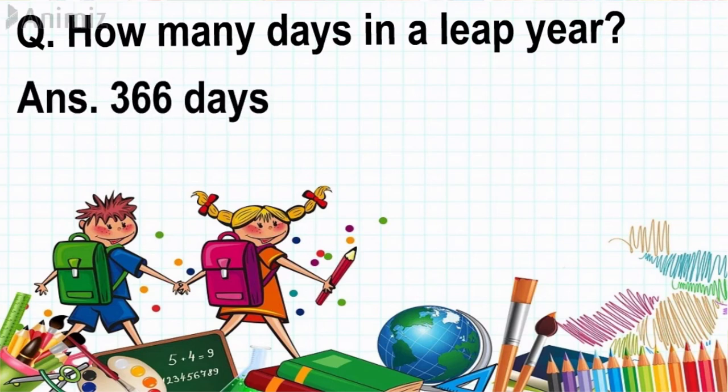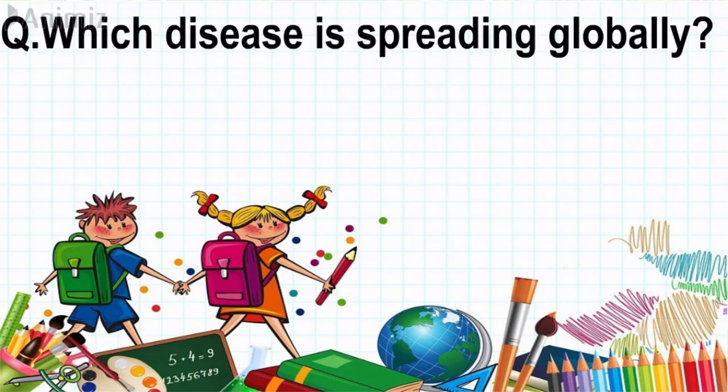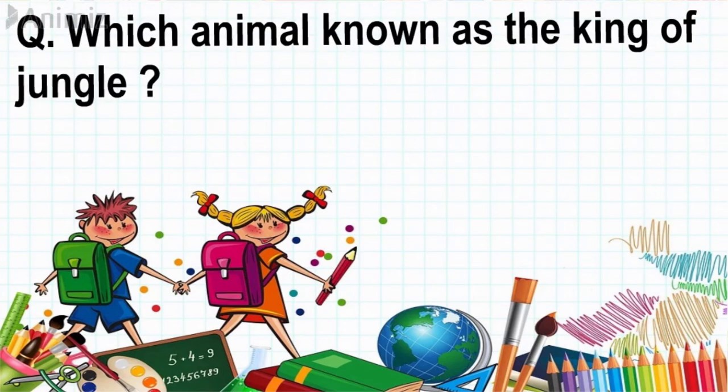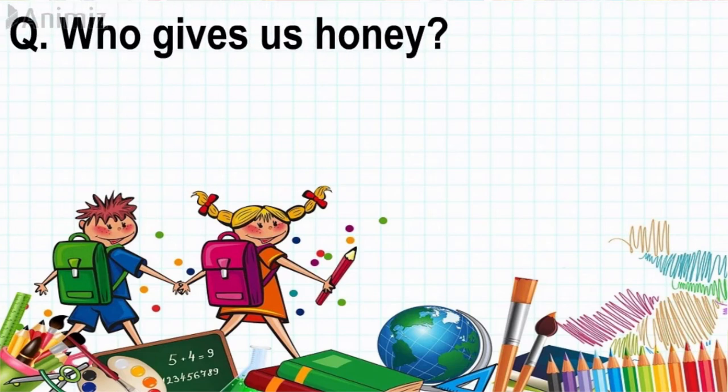Question: Which disease is spreading globally? Answer: COVID-19. Question: Which animal is known as the king of jungle? Answer: Lion. Question: Who gives us honey? Answer: Bee.